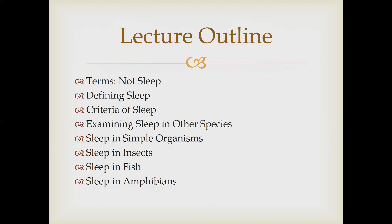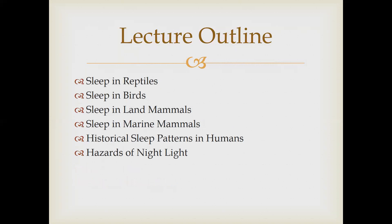When you look at sleep in different species — simple organisms, insects, fish, amphibians, reptiles, birds, land mammals, marine mammals, and eventually humans — these are very different species, and we have to think about what sleep means for each of them. Do we need different definitions? Do we need different pieces? How do we need to look at this?